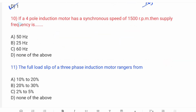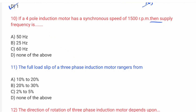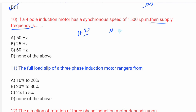Next question: if a four-pole induction motor has a synchronous speed of 1500 RPM, then the supply frequency is found using Ns = 120F / P. Rearranging: F = Ns × P / 120 = 1500 × 4 / 120 = 50 Hz. The full load slip of a three-phase induction motor ranges from 2% to 5%.